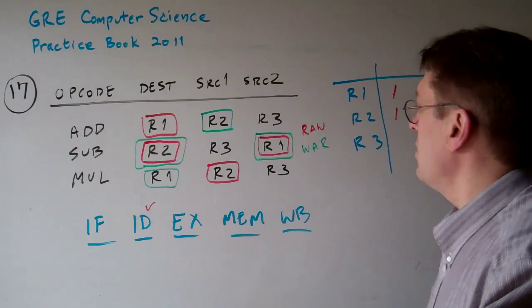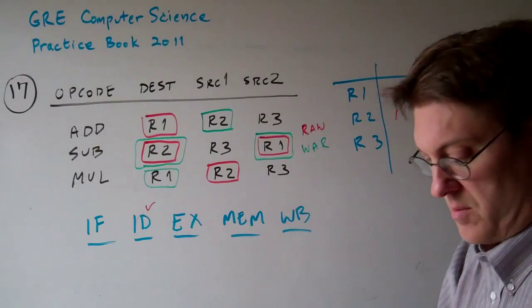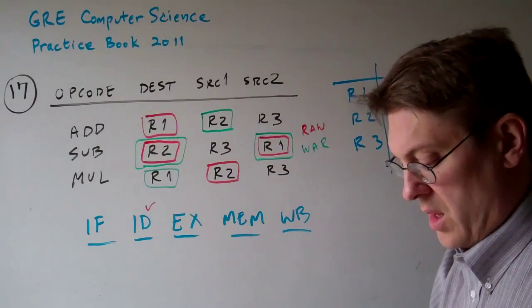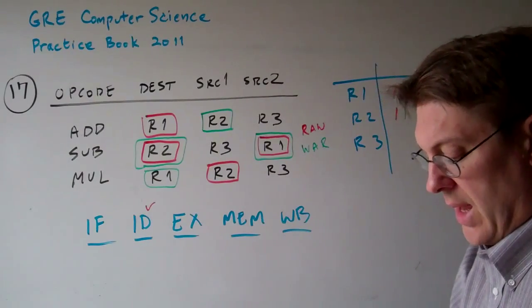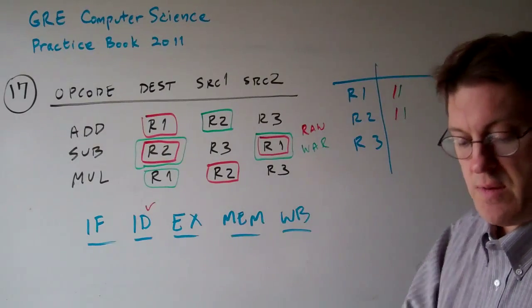So we have, for register 1 and register 2, we also have two WAR hazards. The ID state needs to detect those to see if they're a problem.